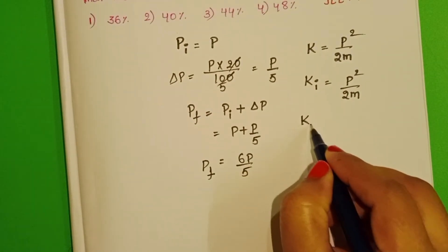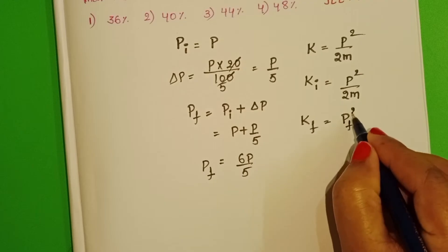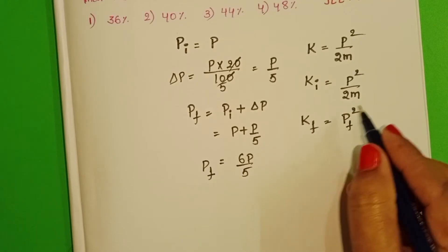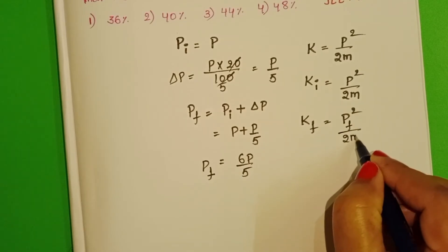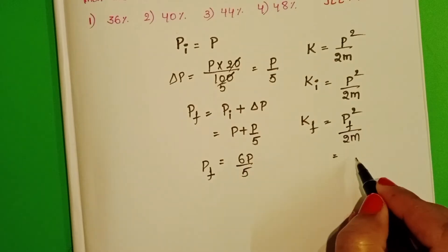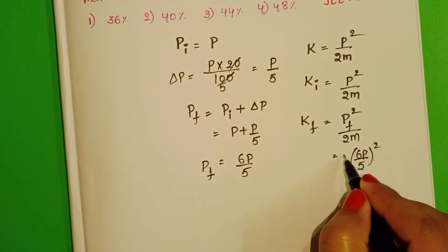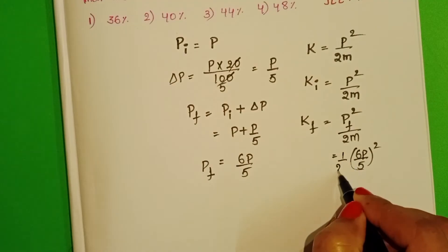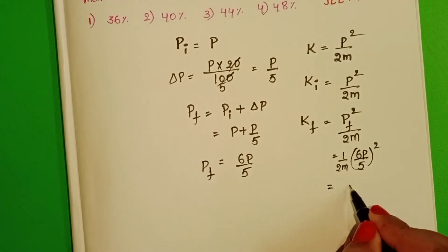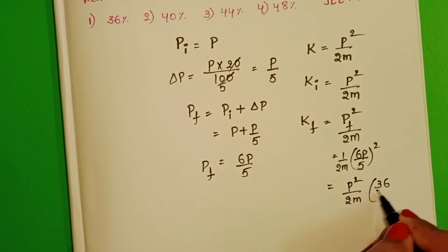And final kinetic energy equals final momentum squared by 2m. Substituting 6P by 5 in place of P, we get (6P/5) squared by 2m, which equals P squared by 2m multiplied by 36 by 25.